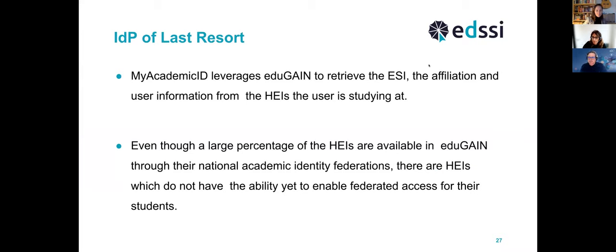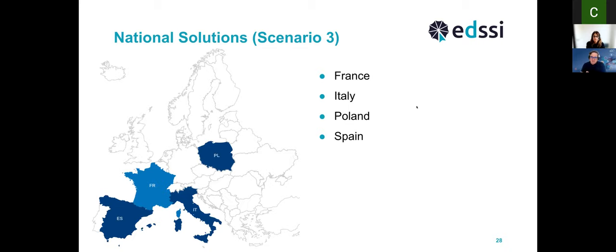My Academic ID leverages EduGain to retrieve the university identifier, affiliation, and user information from institutions. Even though a large percentage of institutions are available in EduGain, not all of them have the ability to use federated access — this is why we have scenarios three and four. For scenario three, in Italy, France, Poland, and Spain there are solutions provided by the national research and education networks. In the next months or years, we expect more countries to deploy solutions, so the centrally operated IDP of Last Resort is really meant to be the last resort — when all other scenarios have been exhausted.